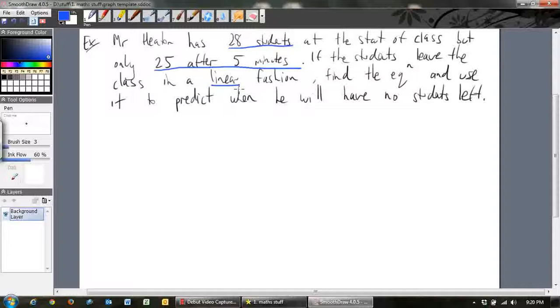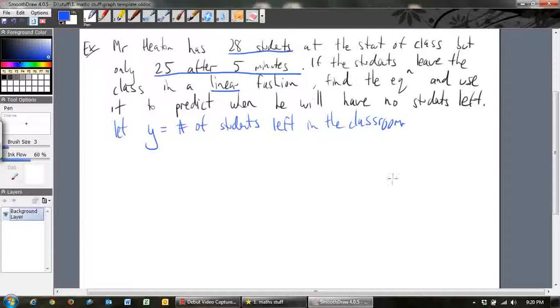It's good to start with defining some variables because without that we're sort of lost. Okay, so what we're going to say is, let y be the number of students left in the classroom. Okay, so y will be the number of students left in the classroom. It's really important to say what y is and what x is. And we're going to let x be the number of minutes since the class started. Okay, so they're my two variables. And they're the two variables I'm going to develop our linear equation around.